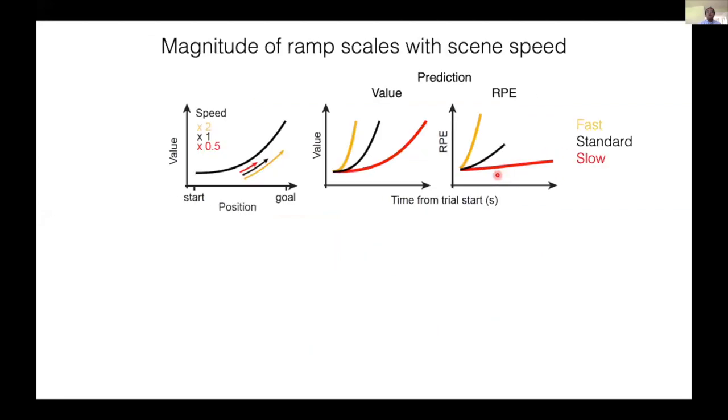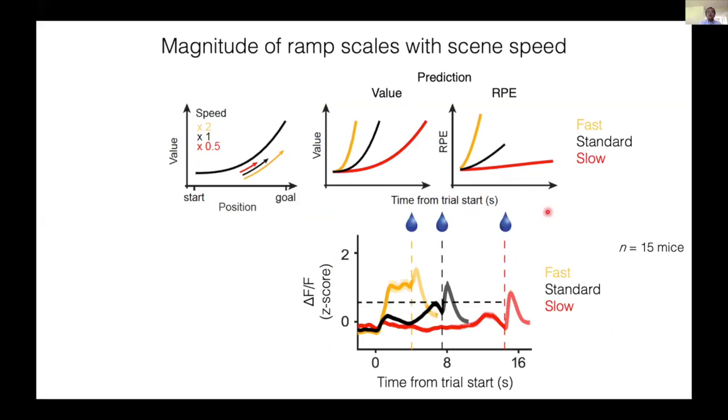We next performed speed manipulations. Compared to the standard condition, the slow speed resulted in weaker ramps, and a faster speed resulted in a greater ramp. And these results are difficult to explain again by the value hypothesis, as it predicts that the value should be the same at the goal location. Instead, these results are consistent with the idea that the dopamine activity encodes TD error or the temporal derivative of a value function.